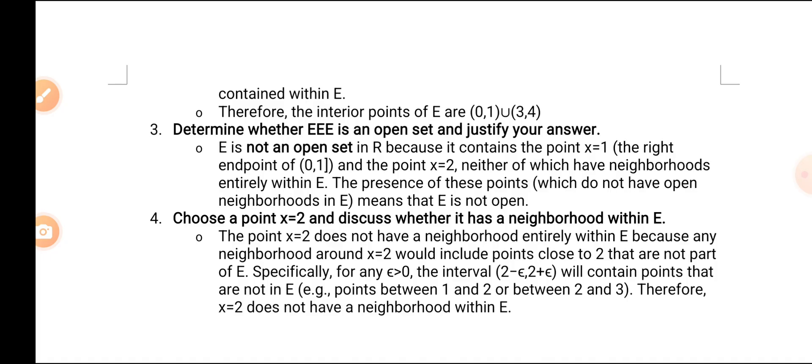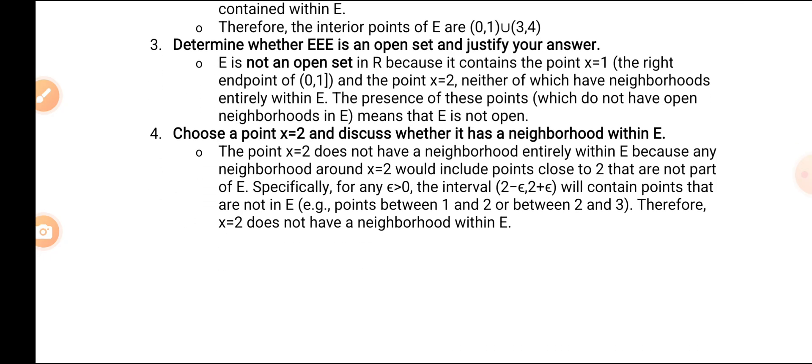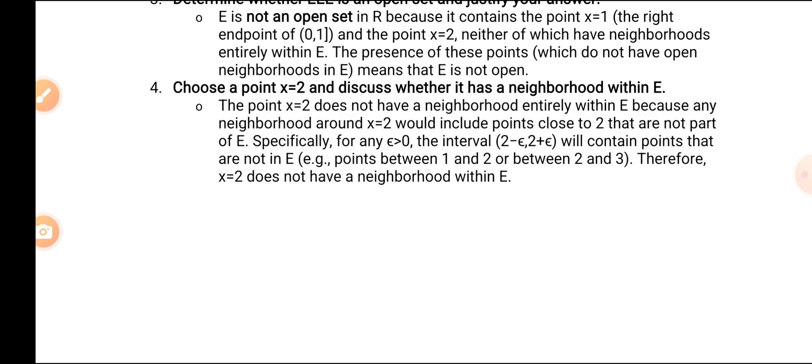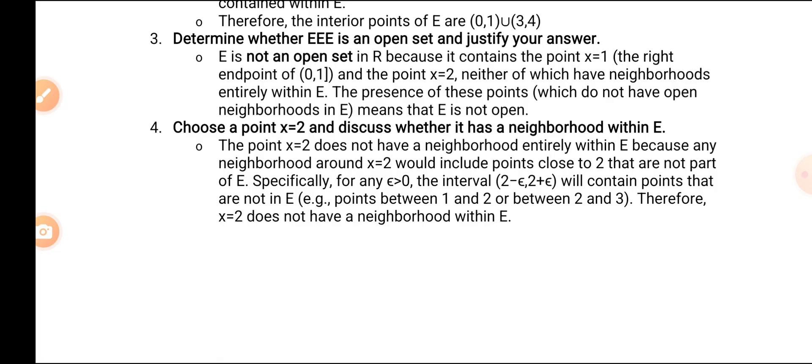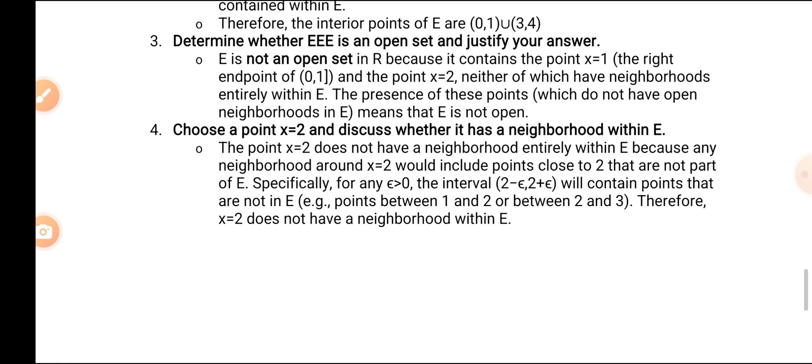Now determine whether E is an open set and justify the answer. E is not an open set because it contains the point x = 1 — the right endpoint of (0,1) — and the point x = 2, neither of which have neighborhoods entirely within E. The presence of these points, which do not have open neighborhoods in E, means E is not open. For the point x = 2, any neighborhood around x = 2 would include points not part of E; specifically for any epsilon > 0, the interval (2−ε, 2+ε) contains points not in E, such as points between 1 and 2 or between 2 and 3. Therefore x = 2 does not have a neighborhood within E.